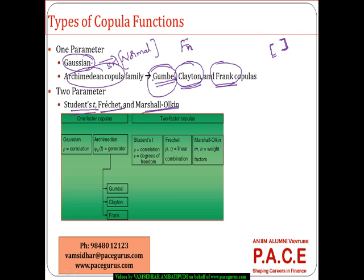These are all different kinds of Copula functions targeted based on their parameters. In a Gaussian Copula, only the correlation is an important factor. In the Archimedean Copula, it is phi of T, called the generator — based on this phi of T it is treated as Gumbel, Clayton, or Frank. In the Student's T Copula, we look at two factors: the correlation as well as the degrees of freedom. In Fréchet, we use two variables P and Q in a linear combination; in Marshall-Olkin, M and N are the factor weights — making them two-parameter models.